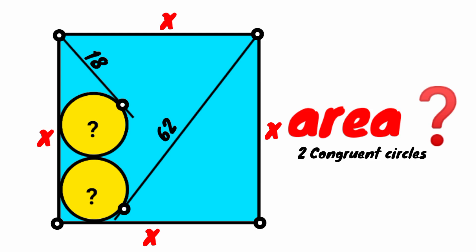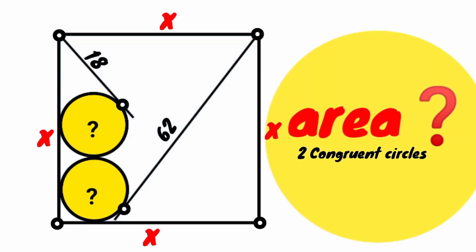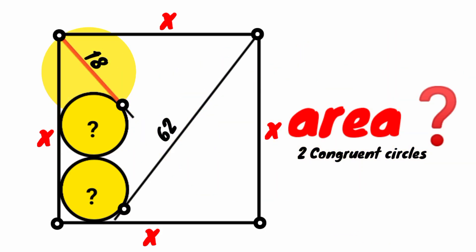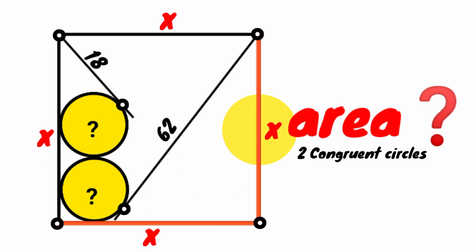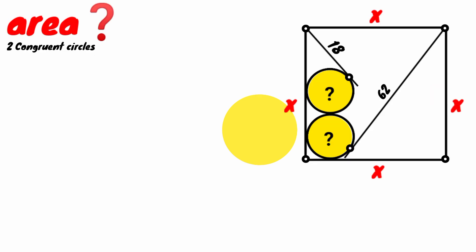Hi friends, you are welcome back. In today's question, we are asked to calculate the area of the two congruent circles, that is this and this. We have the length of this line segment to be 18 and that of this is 62 units. The length of this side is x, this side also is x, and that of this and this are also x. So how can we calculate the area of these circles?